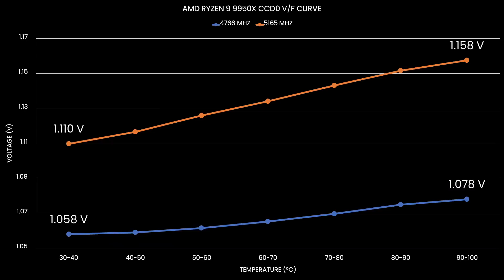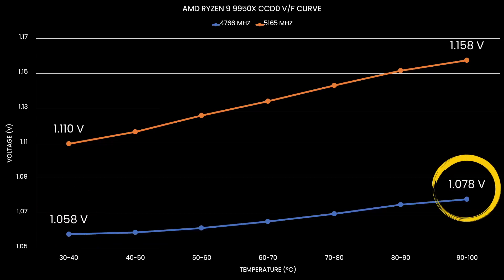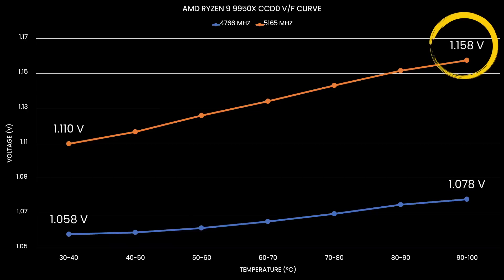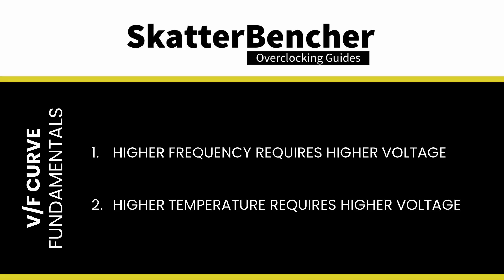On average, for 4766 MHz, we need 1.06V below 40°C and almost 1.08V above 90°C. And for 5165 MHz, we only need 1.11V below 40°C and 1.158V above 90°C. So we have two fundamental rules governing the voltage-frequency curve: a higher frequency requires higher voltages, and a higher temperature requires higher voltages.